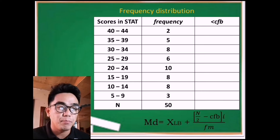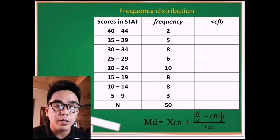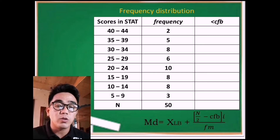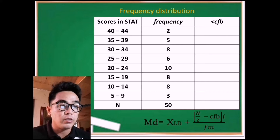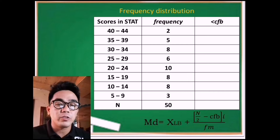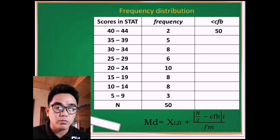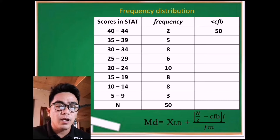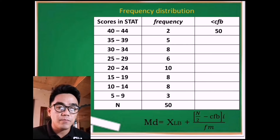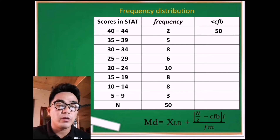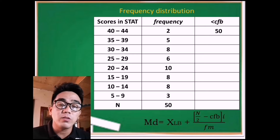The process is: first, determine the total frequency or total number of population. In this frequency distribution we have 50, so bring down 50 on the first row. In order to get the existing rows — the second, third, and so on — we need to do subtraction. We subtract the frequency on each corresponding row. So 50 minus 2 equals 48.